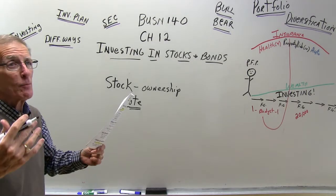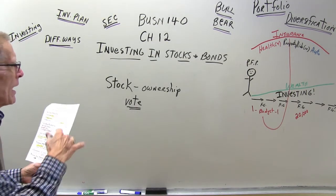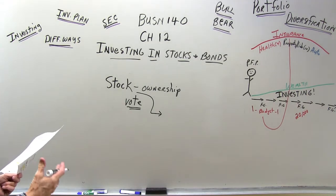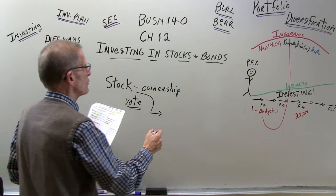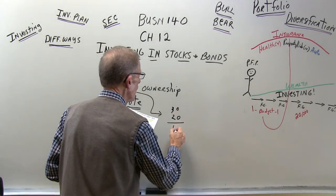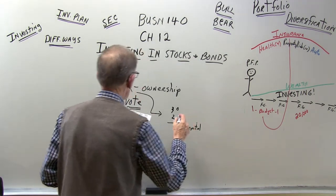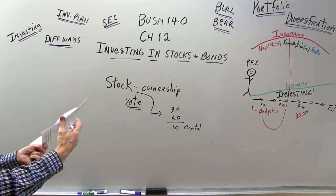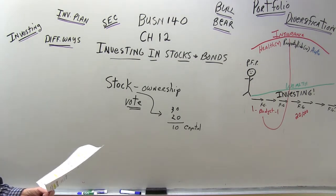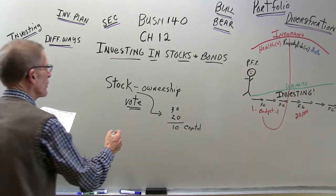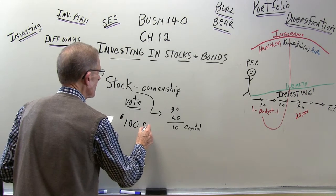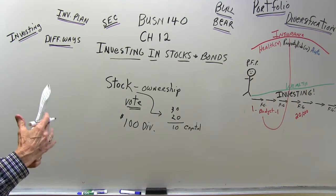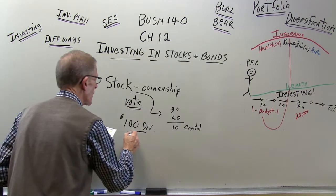Corporations have a board of directors elected by the stockholders, who set broad policy and procedure for companies. As a stockholder or owner, you can vote at stockholder meetings — though if you only have one share of stock, you won't have much clout. Two ways to make money from stock ownership: buy at $20 and sell at $30 for a $10 capital gain, or periodically receive a dividend — say, $1 per share — if the company is doing well.